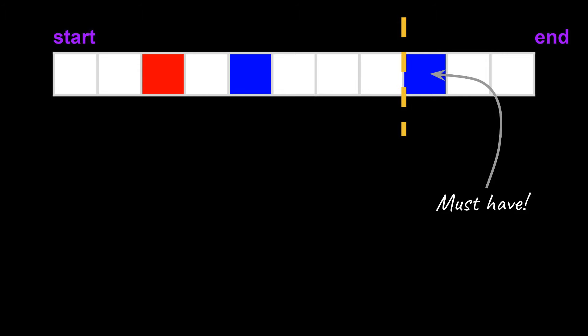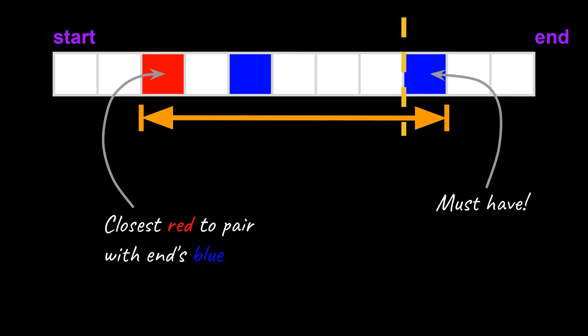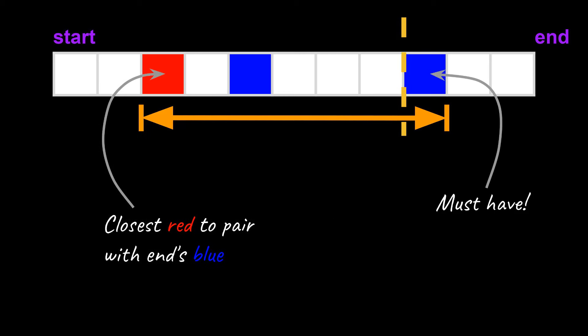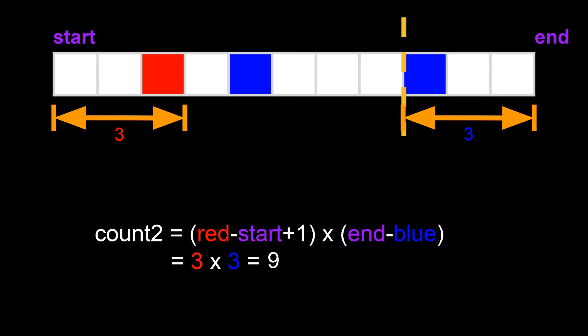The same principle also applies if the new square is blue. Just like before, the new square is a must-have, except this time we pair it with the last red square we've seen. All new valid subarrays must contain both of these squares. This is very similar to what we did just a while before, except the colors are reversed. Instead of looking for the last blue square, we now look for the last red square. We use the same formula as before, this time with the colors reversed. Count 2 equals to red minus start plus 1 times n minus blue.